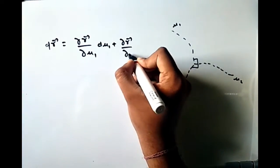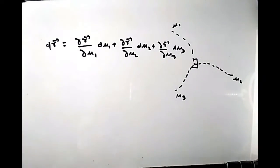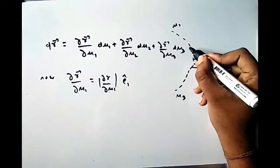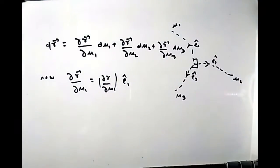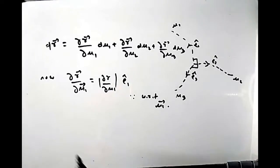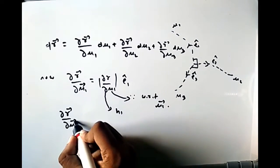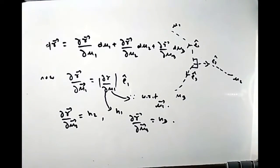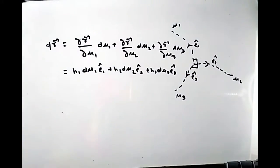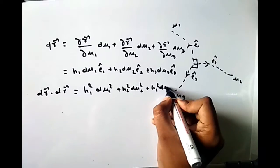The infinitesimal length element dr in orthogonal curvilinear coordinates can be written as dr = (∂r/∂u₁)du₁ + (∂r/∂u₂)du₂ + (∂r/∂u₃)du₃. The partial derivative ∂r/∂u₁ has magnitude h₁ and direction ê₁, where ê₁ is along the u₁ curve. So ∂r/∂u₁ = h₁ ê₁, and therefore dr = h₁ du₁ ê₁ + h₂ du₂ ê₂ + h₃ du₃ ê₃, where h₁, h₂, h₃ are the metric coefficients.